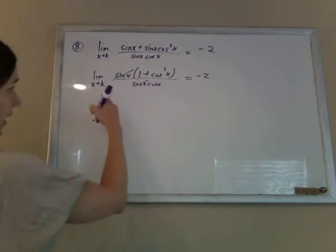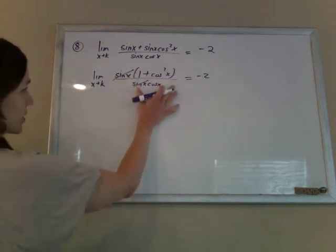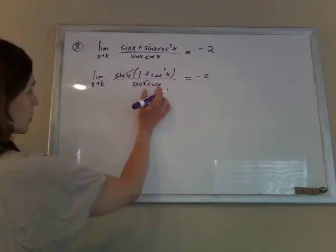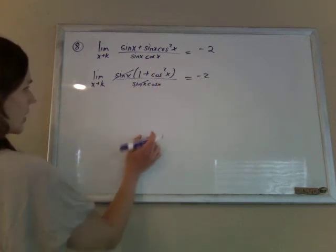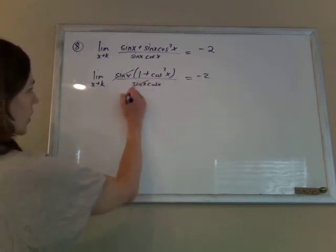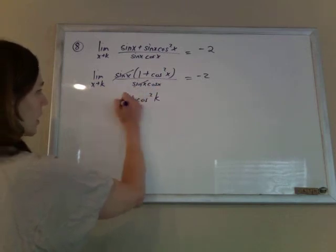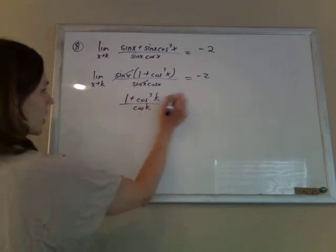Now if I plug in the k, because it's safe for a continuous function, so long as k doesn't make the bottom 0, I can plug in the k.